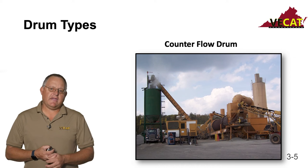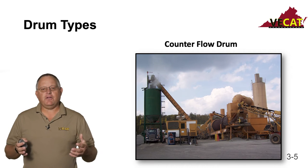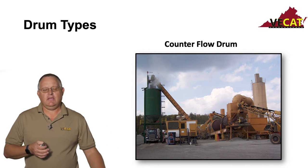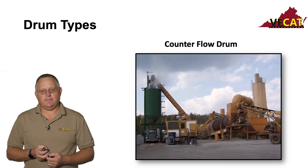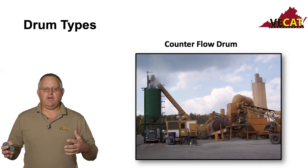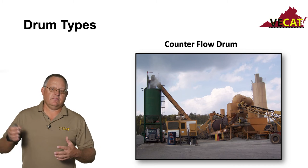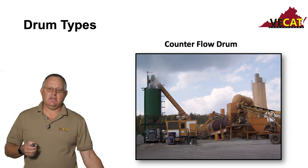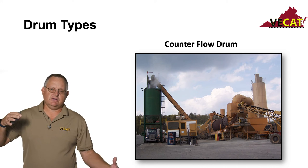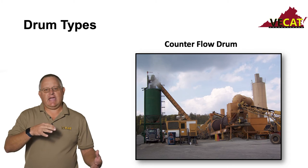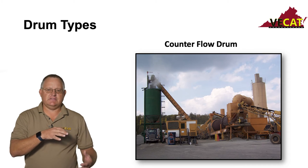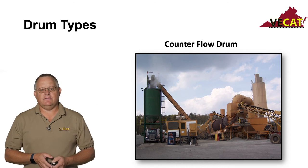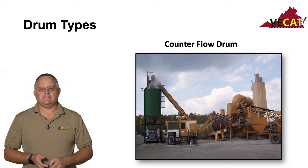Counter flow drums mean heat is on one end of the drum and the material goes into the other end. The aggregate goes in the upper end, the flame is at the other end, and the material travels toward it. You're getting the aggregate hot, introducing the asphalt and any RAP, it's all mixed, and then it goes up a hot elevator up to the silo.